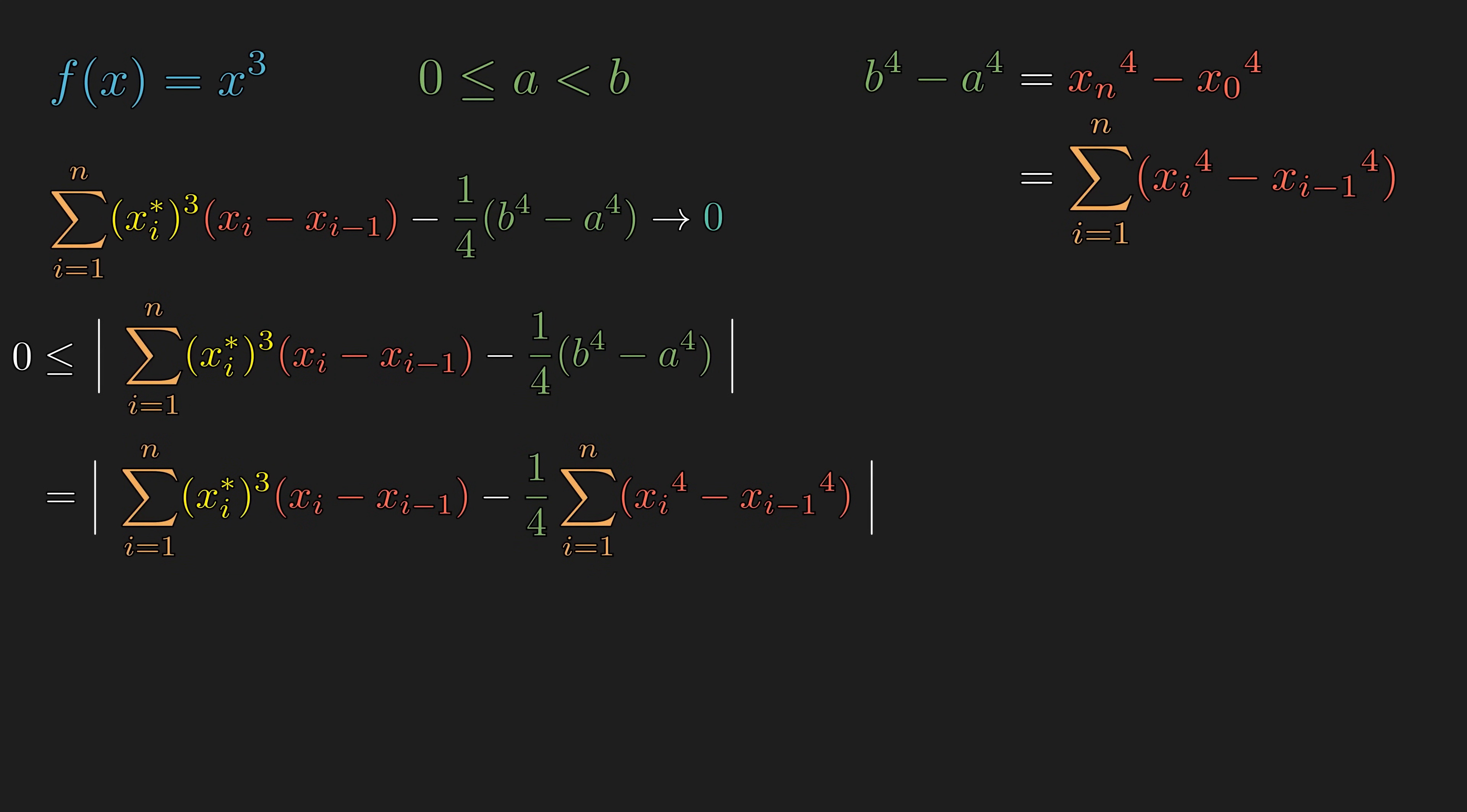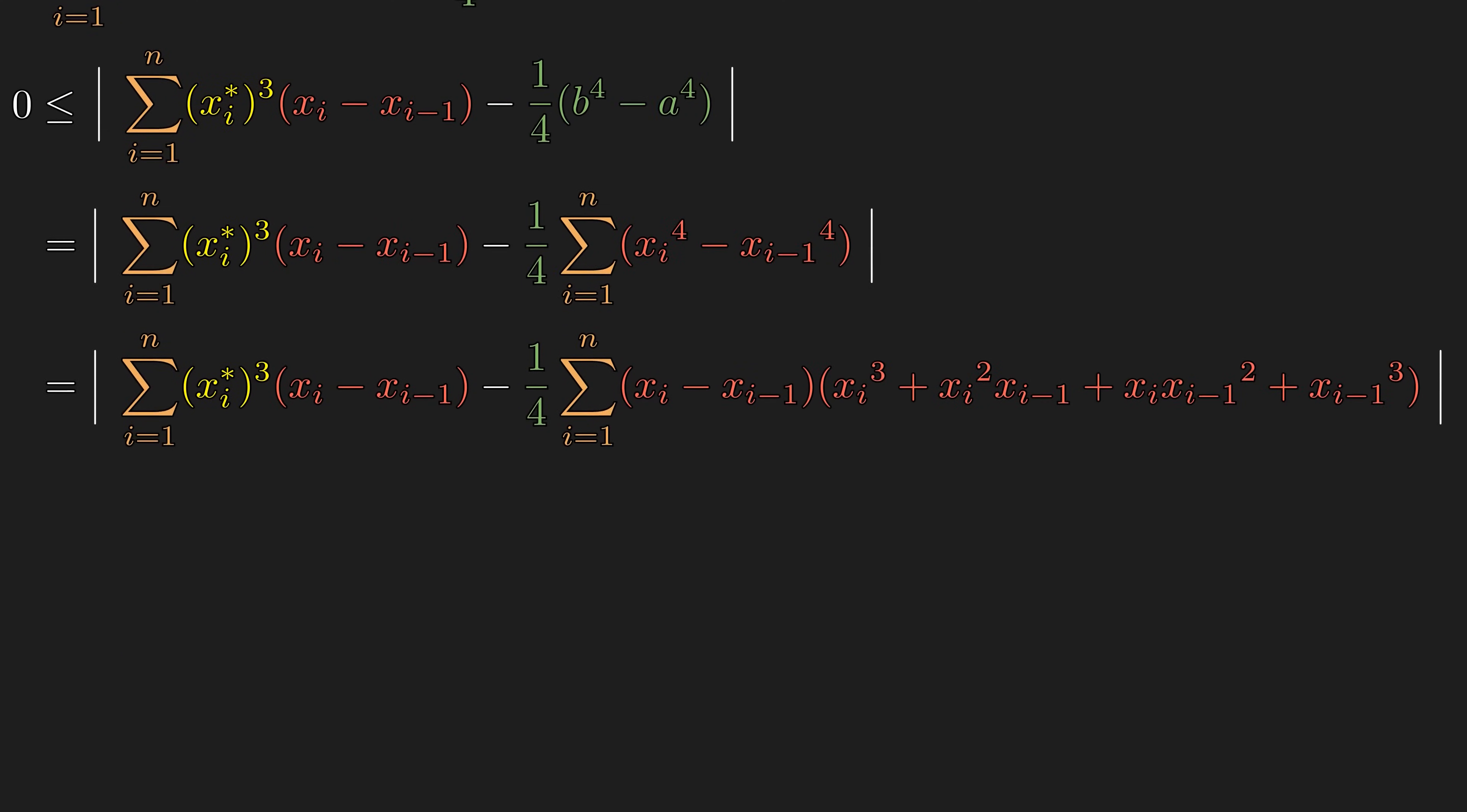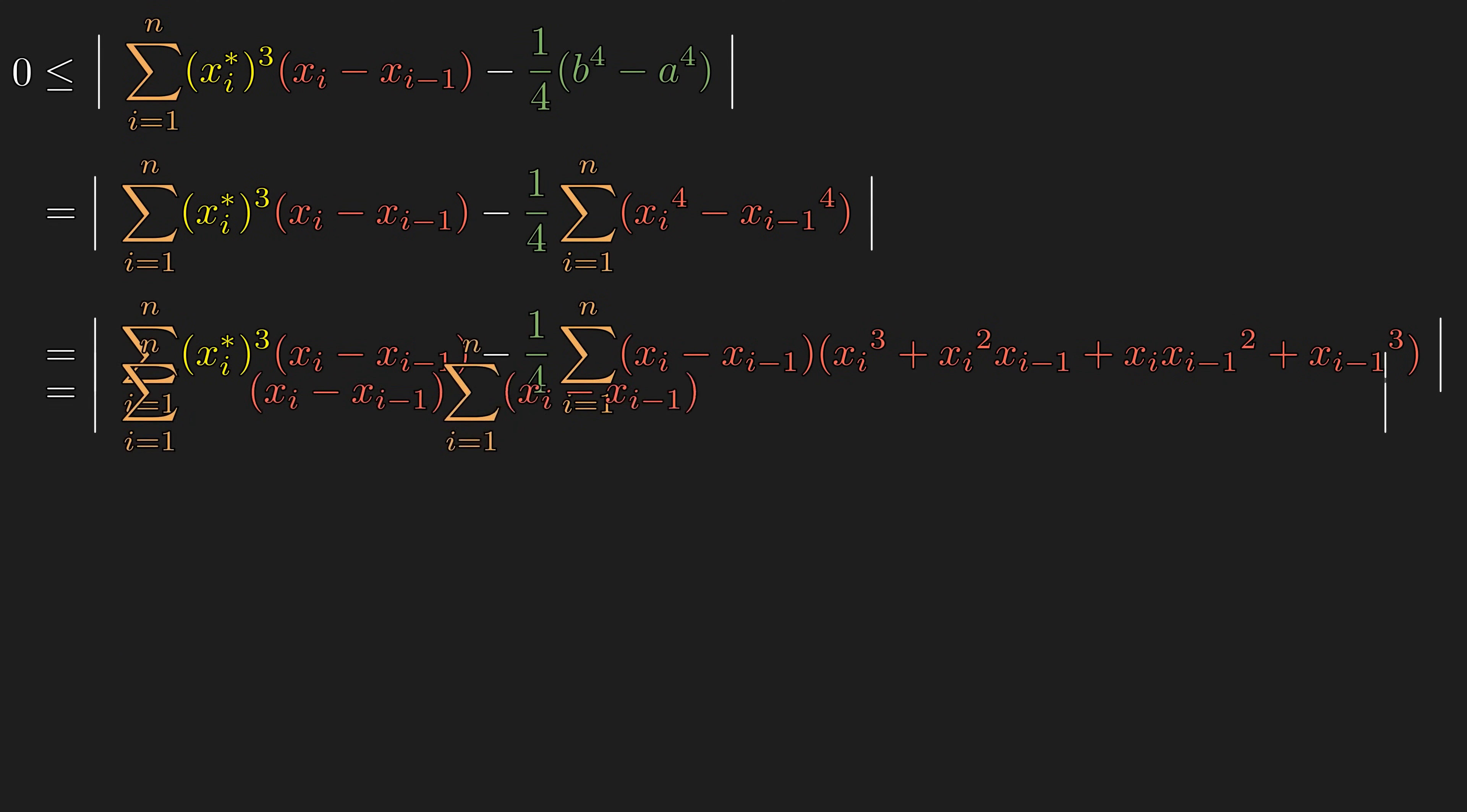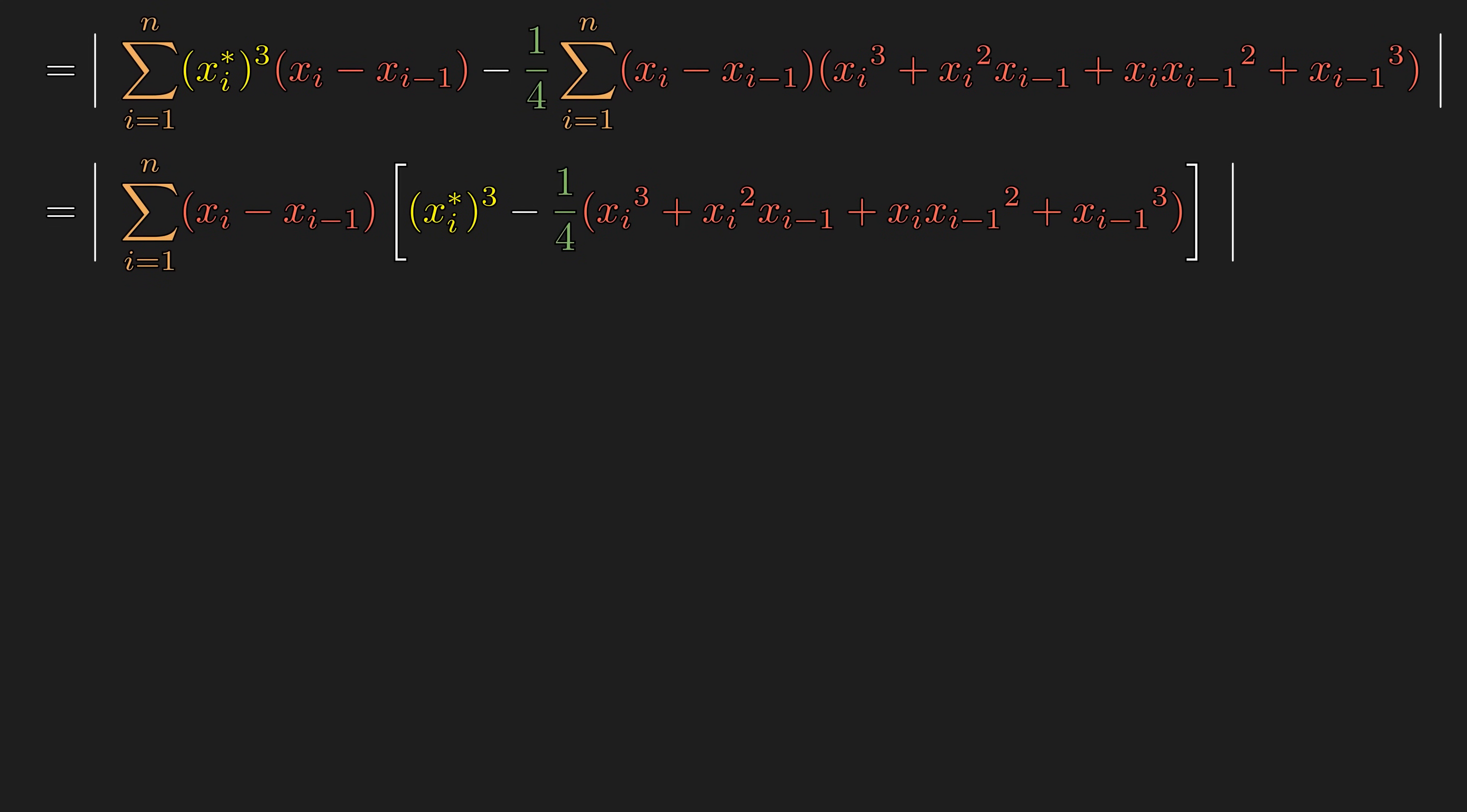We can make our first substitution. The difference of fourths can factor into a linear and a cubic. We made this completely counterintuitive substitution so that we can combine the two summations into one. Next, the absolute value of the sum is less than or equal to the sum of the absolute values. This is called the triangle inequality. If we add a bunch of numbers, positives and negatives can potentially cancel each other out. But if we make each number positive first, then each number adds up constructively.